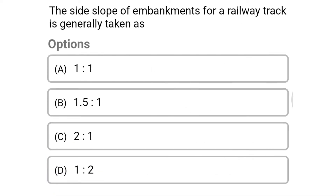Next question: the side slope of embankment of railway track is generally taken as — option A: 1 is to 1, option B: 1.5 is to 1, option C: 2 is to 1, option D: 1 is to 2. The correct answer is option C: 2 is to 1.